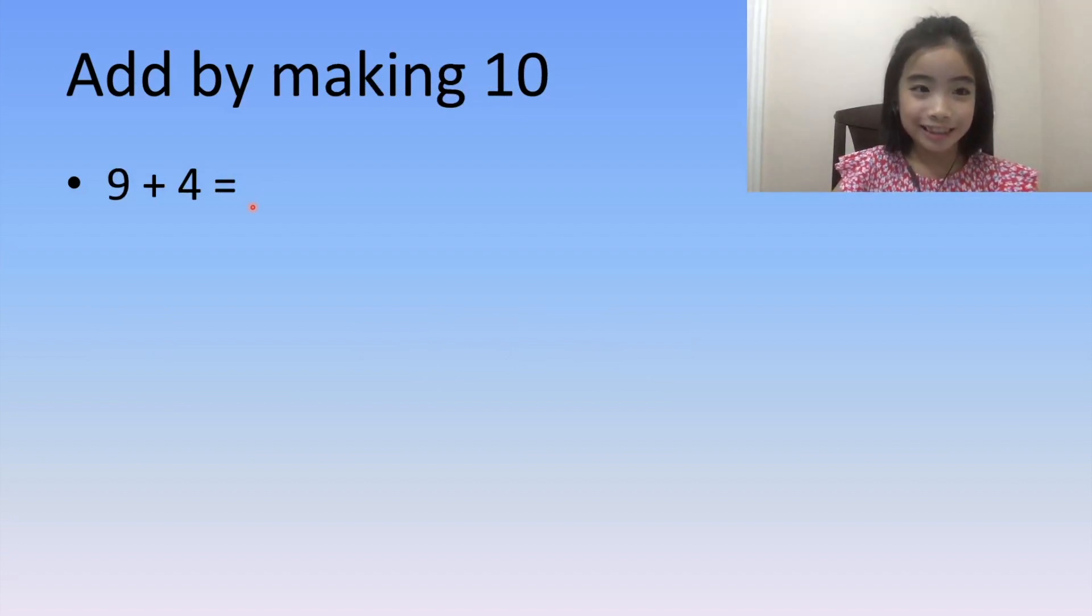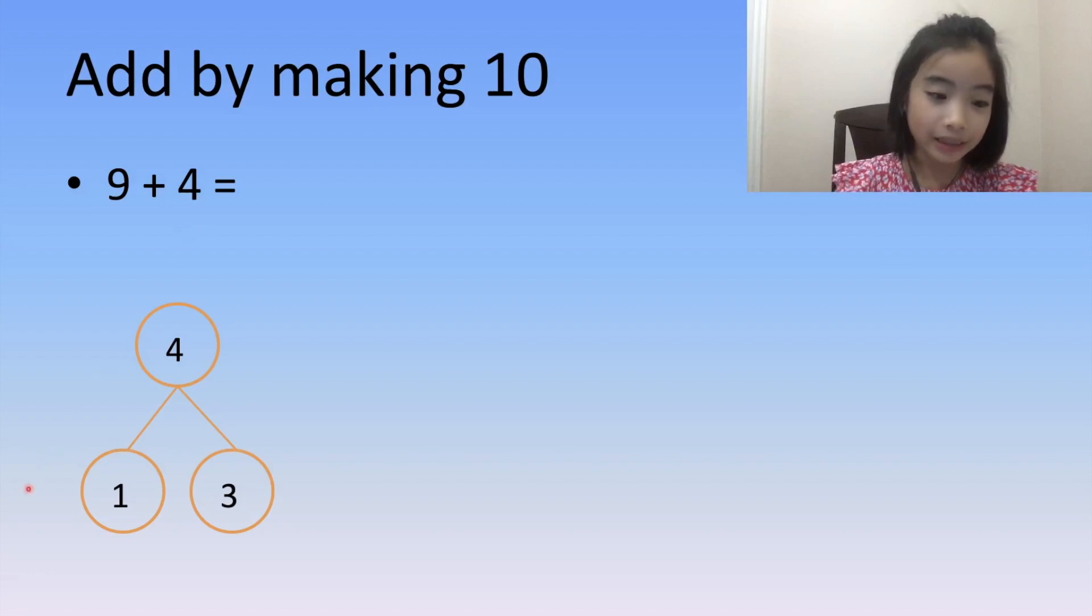Now I'll introduce you to another method called add by making 10. So the example is 9 plus 4. 9 plus 1 equals 10, so we can break 4 into 1 and 3.